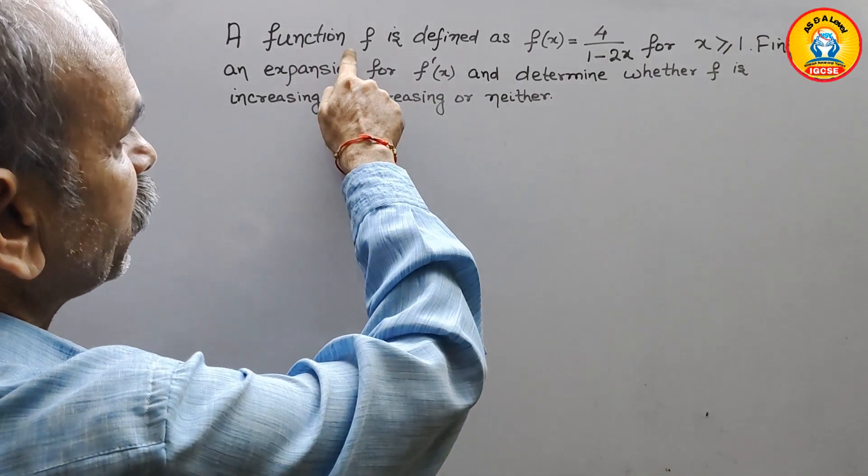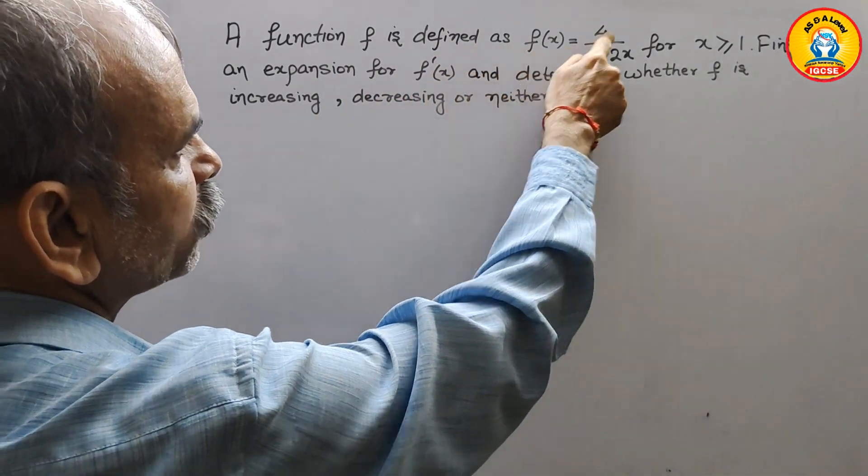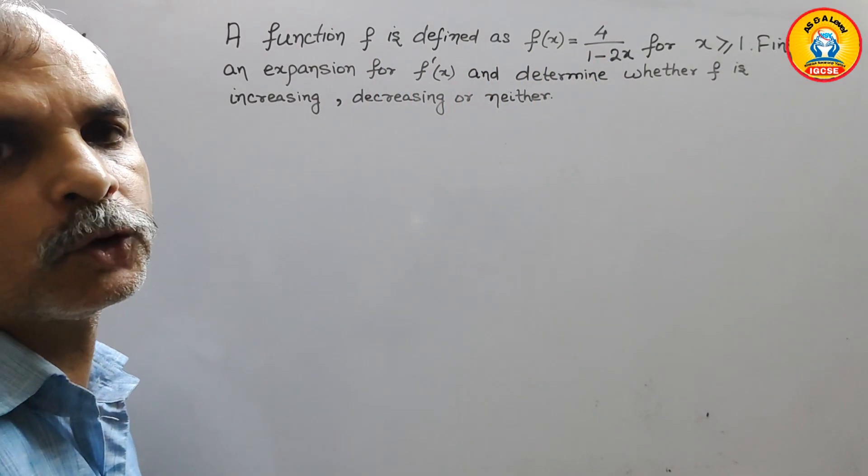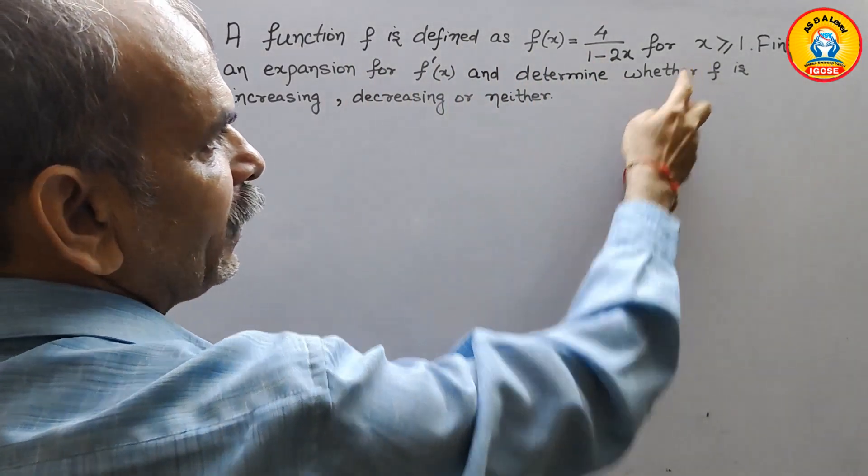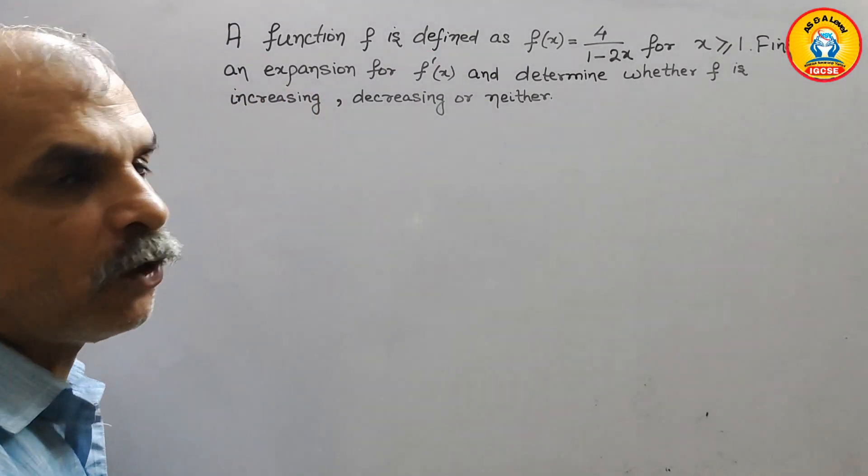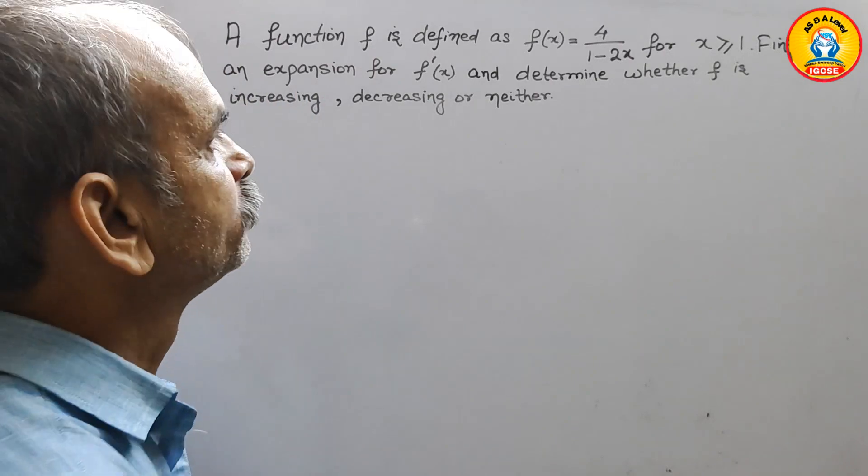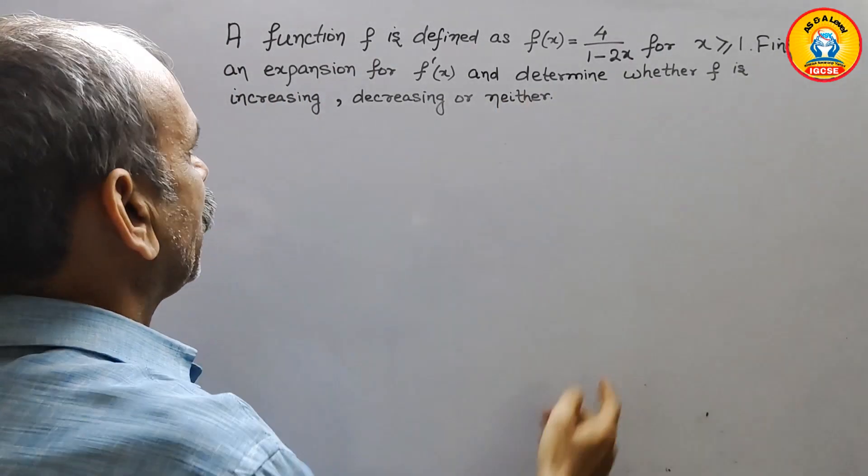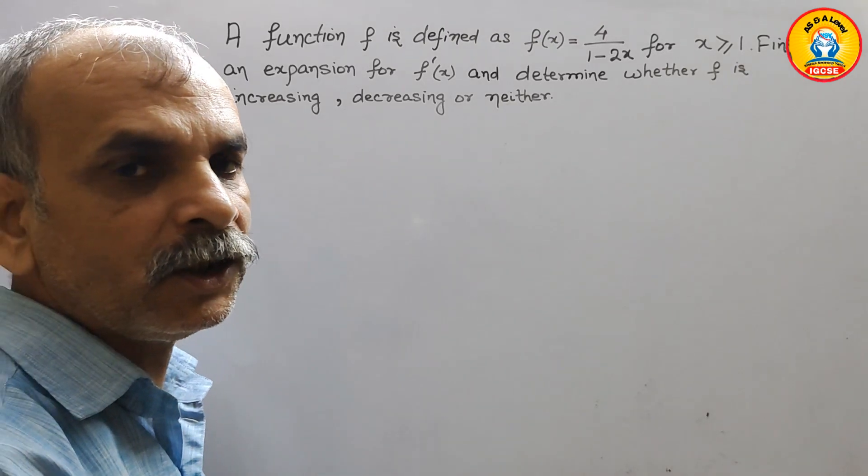Your question is: a function f is defined as f(x) equals 4 over 1 minus 2x for x is greater than or equal to 1. Find an expansion for f'(x) and determine whether f is increasing, decreasing, or neither.